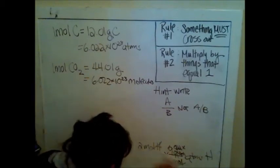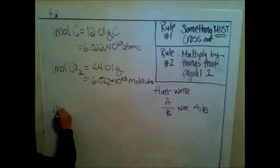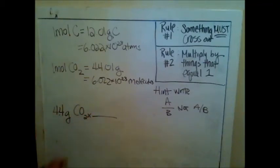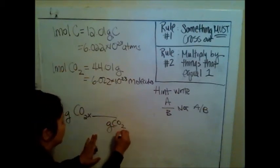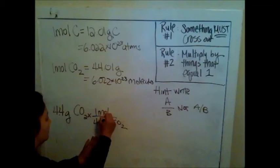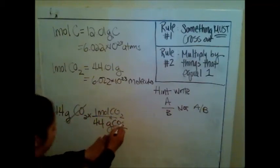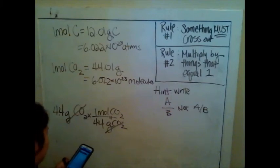Let's say I've got 4.4 grams of CO2. I'm starting with grams. I've got to get rid of the word grams. Rule number one tells me something must cross out, so grams of CO2 has to be in the bottom. 44 grams is 1 mole of CO2. That's the molar mass definition. Something can cross out because grams is on top, grams of CO2 on bottom. I know that 1 mole of CO2 equals 44 grams.